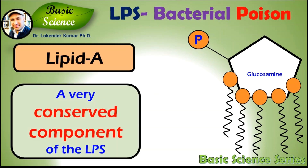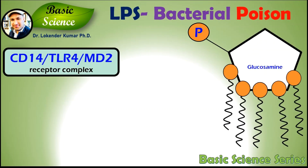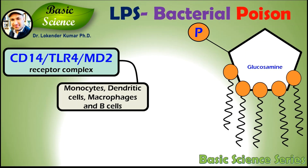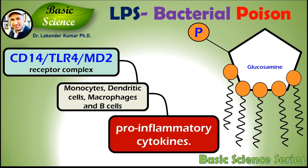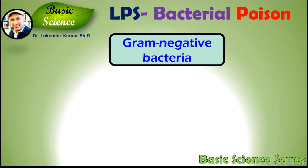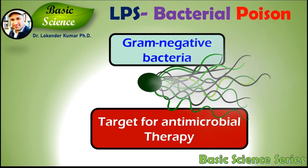The lipid A moiety is a very conserved component of LPS. LPS acts as the prototypical immune system endotoxin because it binds to the CD14-TLR4-MD2 receptor complex in many cell types, but especially in monocytes, dendritic cells, macrophages, and B cells, which promotes the secretion of pro-inflammatory cytokines. Being of crucial importance to gram-negative bacteria, these molecules make ideal candidate targets for new antimicrobial agents.